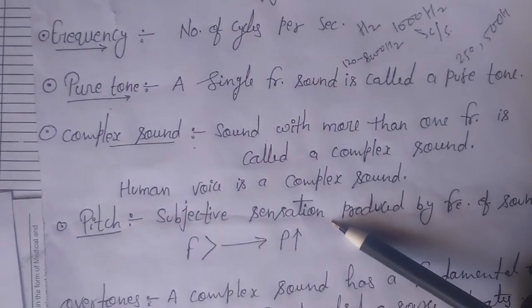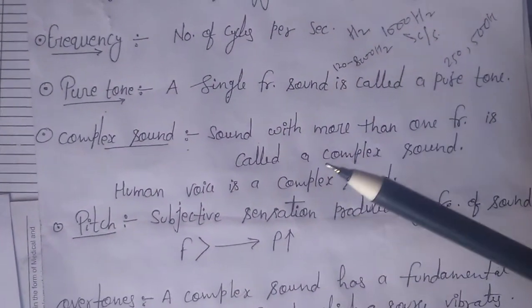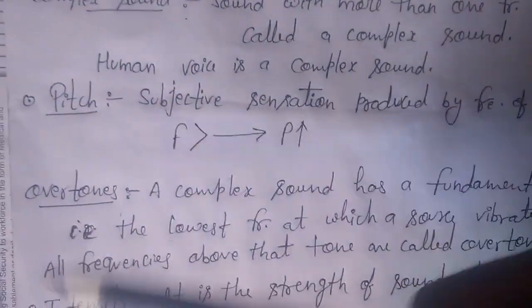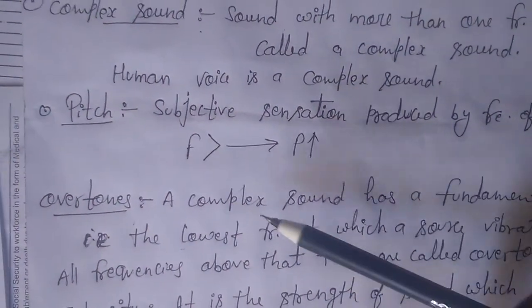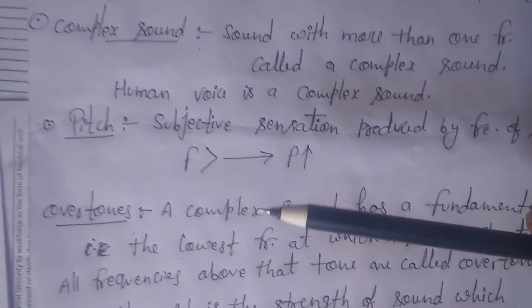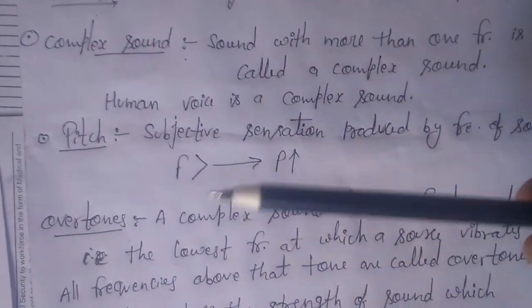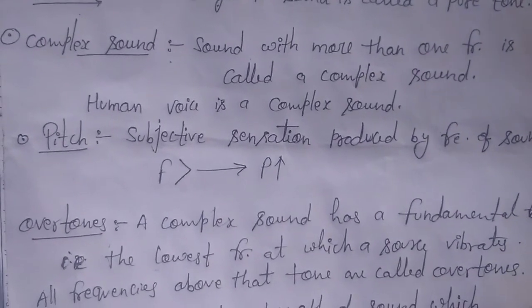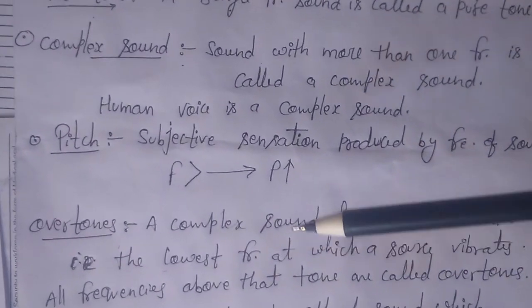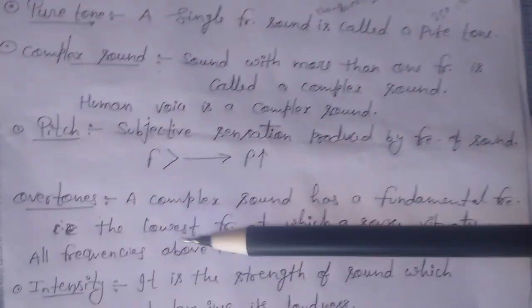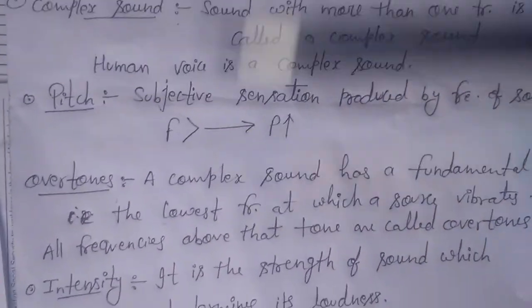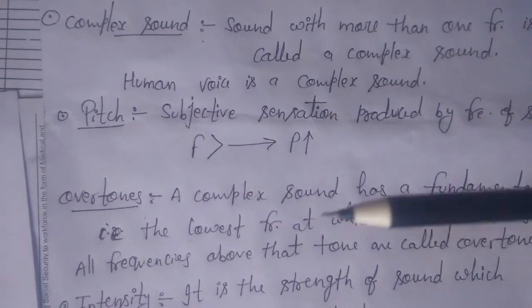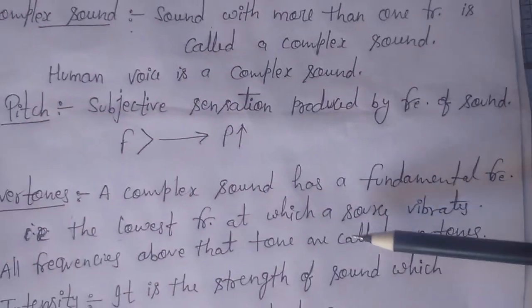Higher frequency has greater pitch. What is overtone? A complex sound has a fundamental frequency, which is the lowest frequency at which the source vibrates. All frequencies above that tone are called overtones.